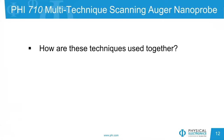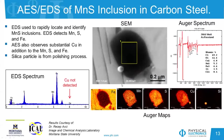Now we'll look at a few different examples of how we can combine these different techniques and provide complementary information. The first example is a manganese sulfide inclusion in carbon steel, where we use both EDS and Auger to analyze these defects. We first use EDS to rapidly locate and identify these manganese sulfide inclusions, because they're not everywhere on the sample surface. In the left-hand panel, we have an EDS spectrum of one of these inclusions, roughly sub-micron in size. We can see that there is manganese and sulfur present, as well as a large signal for iron — though the iron is primarily coming from the surrounding area outside of the inclusion because of the large excitation volume of EDS.